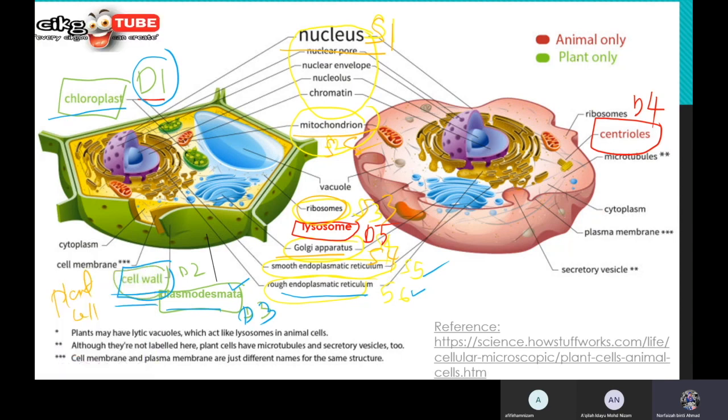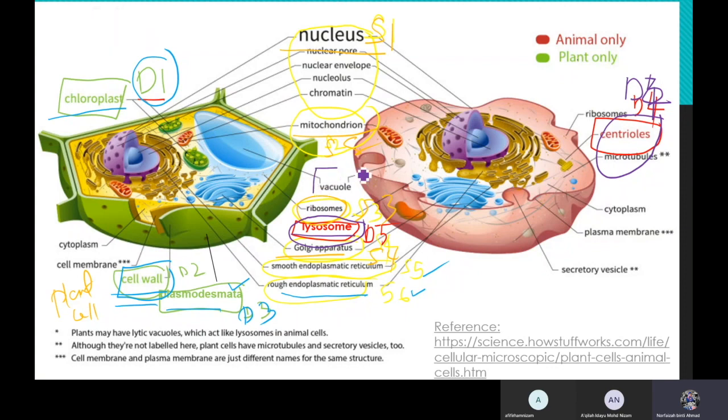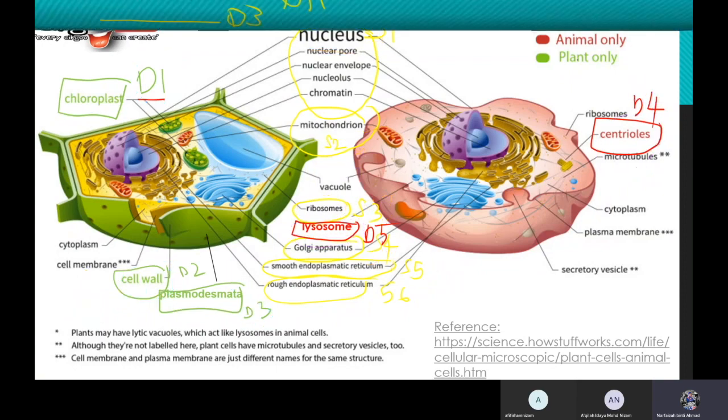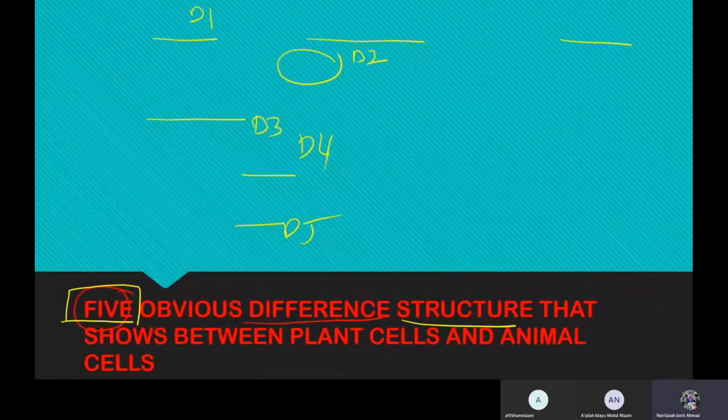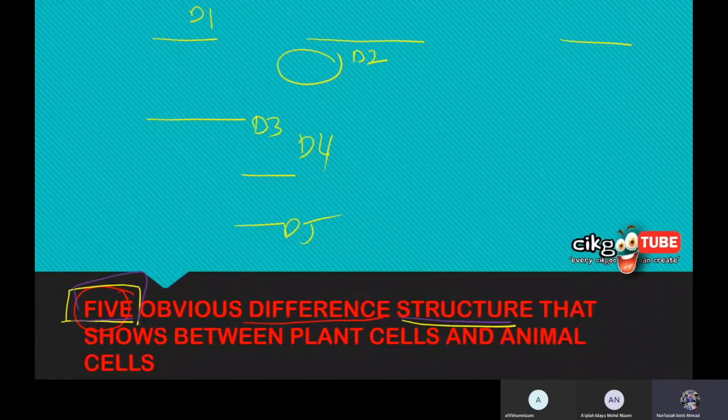Next we proceed to differences on the animal cell. Number four, the difference we can see is centriole having central in plant cell. And then after that is lysosome. Do not forget, we also will see the differences in terms of vacuole. Now let's see the five obvious differences structure.